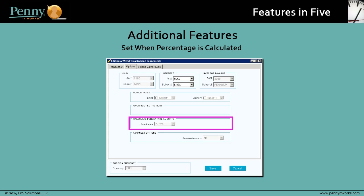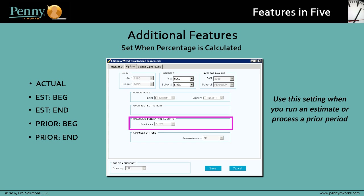An option on the Options tab lets you set the calculation to occur at one of the following times: on the actual date the period is processed; at the beginning or end of the period when an estimate is run; or at the beginning or end of the period when either an estimate or the prior period is processed. You can use this setting when you run an estimate or process a prior period. The system calculates the withdrawal percentage amount, and you can override that amount when the withdrawal period is closed.